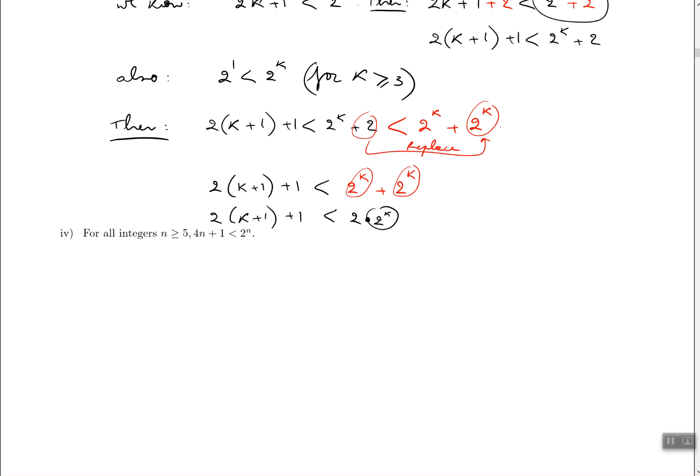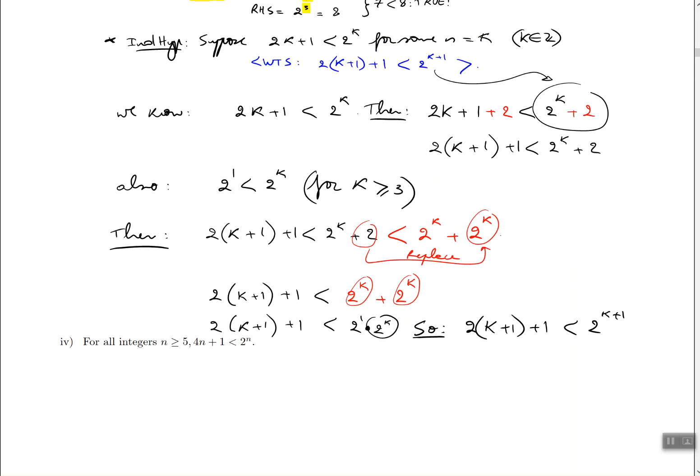But using exponent rules, I can now put it back together and write the following. So 2 times k plus 1 plus 1 is less than 2 to the power of k plus 1. Because I have base 2 and I have base 2 again, the powers must add up, which is what we wanted. This is exactly our statement in the want-to-show comment. So at this point we are finished, so we're going to write down QED.